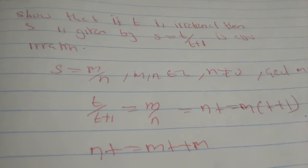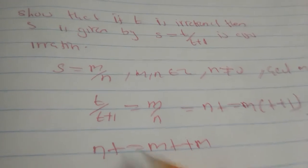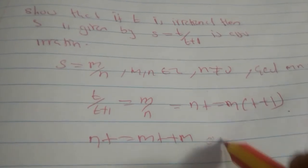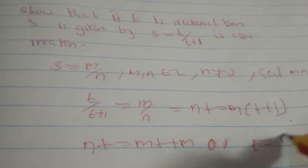We have nt is equal to mt plus m. From this we can see that t is equal to m over n minus m.